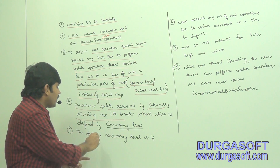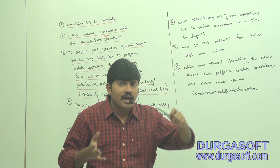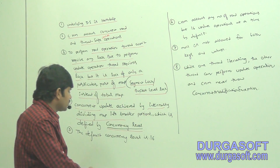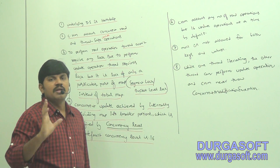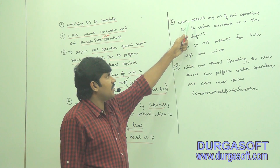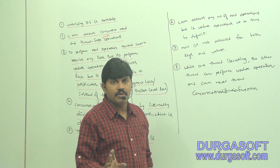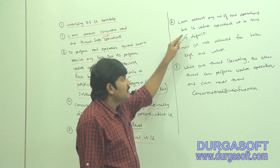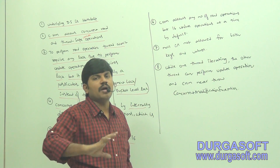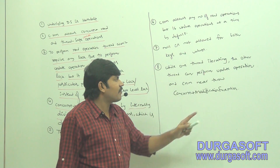Concurrent update is achieved by internally dividing the map into smaller portions, defined by the concurrency level. The default concurrency level is 16, so by default 16 locks are maintained. ConcurrentHashMap allows any number of read operations but 16 update operations at a time by default. Also, null is not allowed for both key and value in ConcurrentHashMap — same as HashTable.